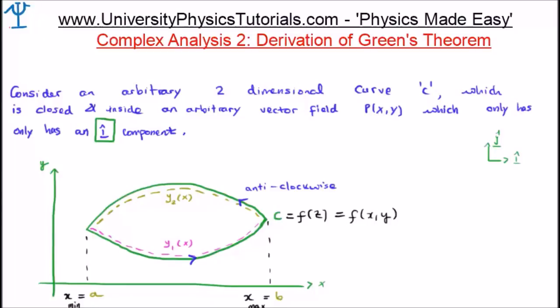In this video I'd like to continue on with my tutorials discussing complex analysis. This is video number 2 and I'm going to derive Green's Theorem. Green's Theorem is one of the fundamental theorems in complex analysis. To give you a small bit of motivation as to where it's used — if you're discussing electromagnetism you require a lot of vector calculus, and a lot of the results of vector calculus come from Green's Theorem. So if you haven't a strong knowledge of Green's Theorem you can't truly get stuck into vector calculus or electromagnetism.